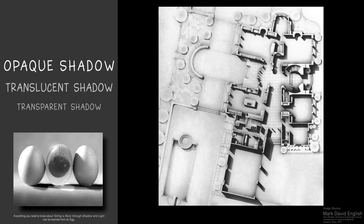This drawing by architectural illustrator Mark English uses opaque shadows for thick walls. He uses translucent shadows further away from the wall to avoid hiding important information. And in this case, he uses transparent shadows for the landscape to ensure that the emphasis remains on the architectural plan.